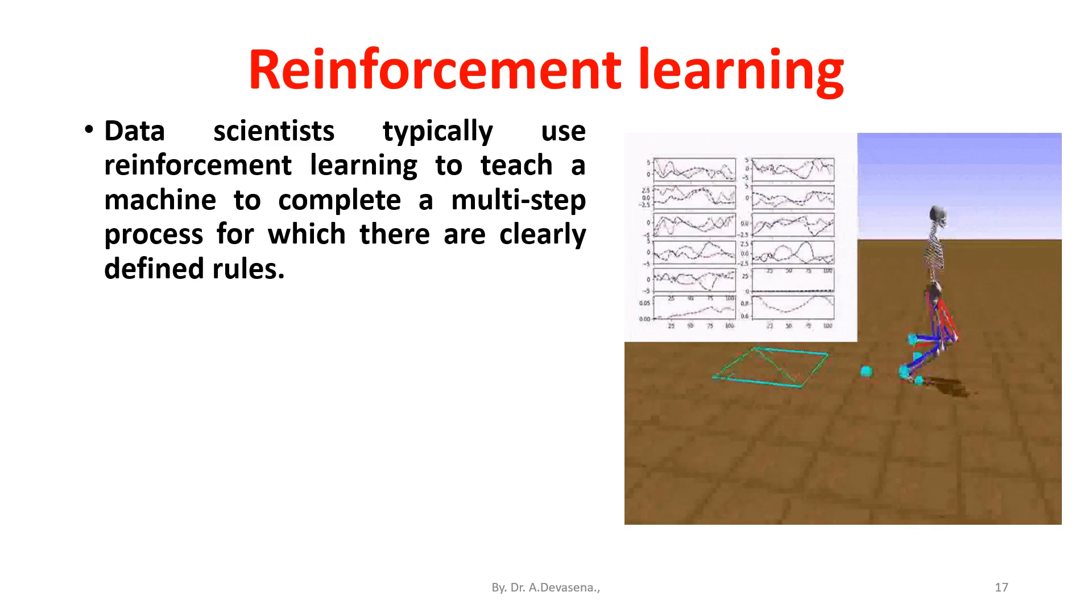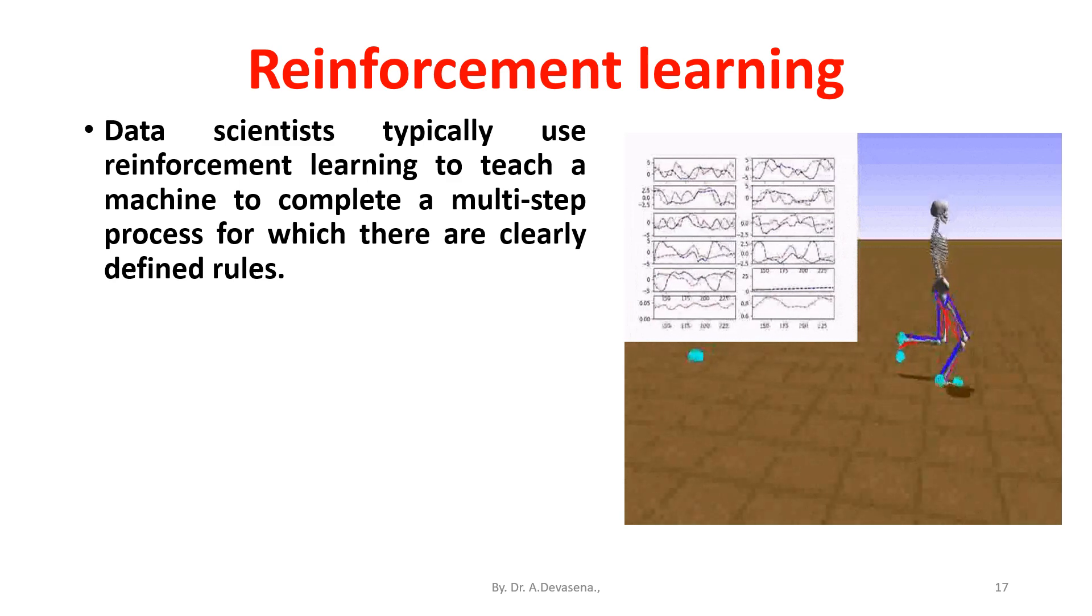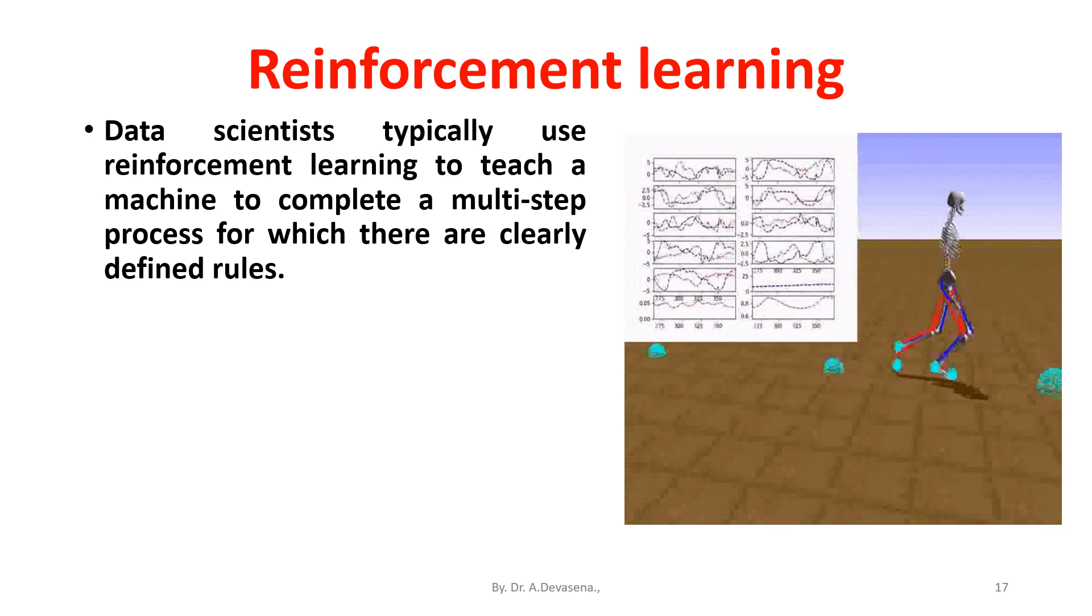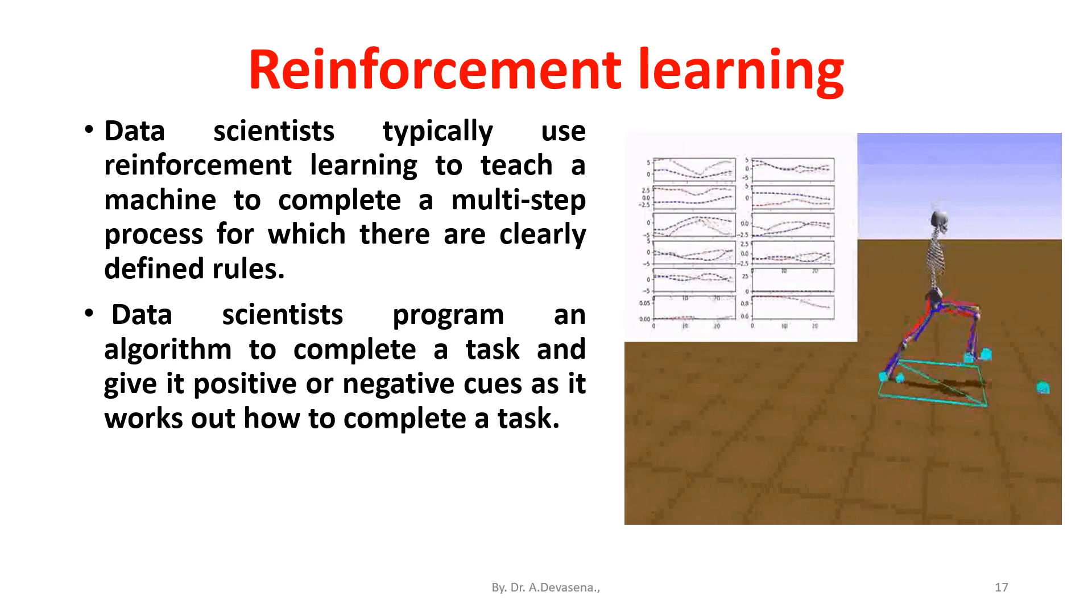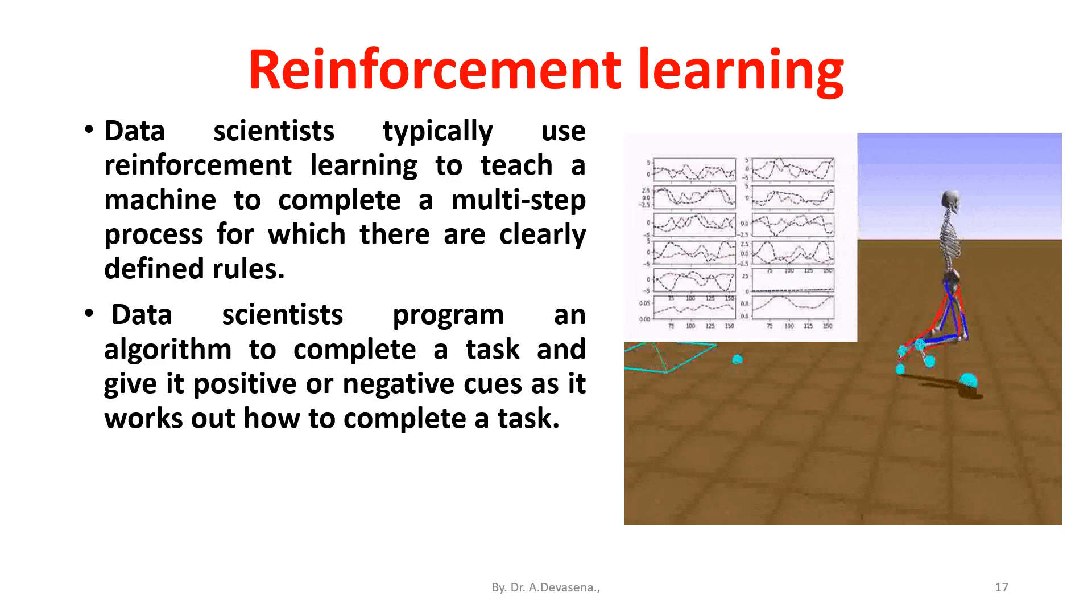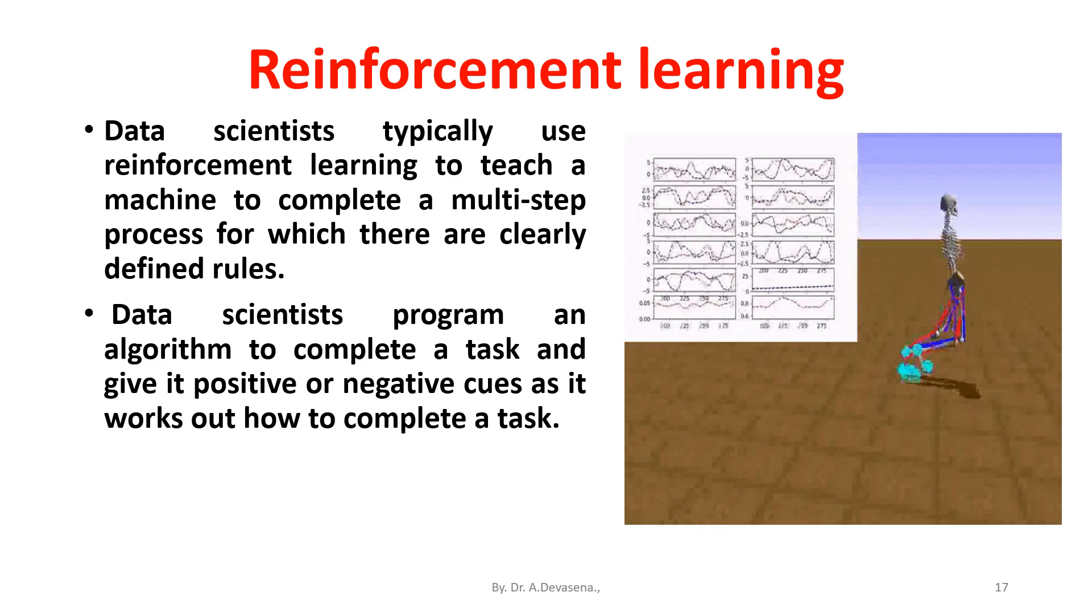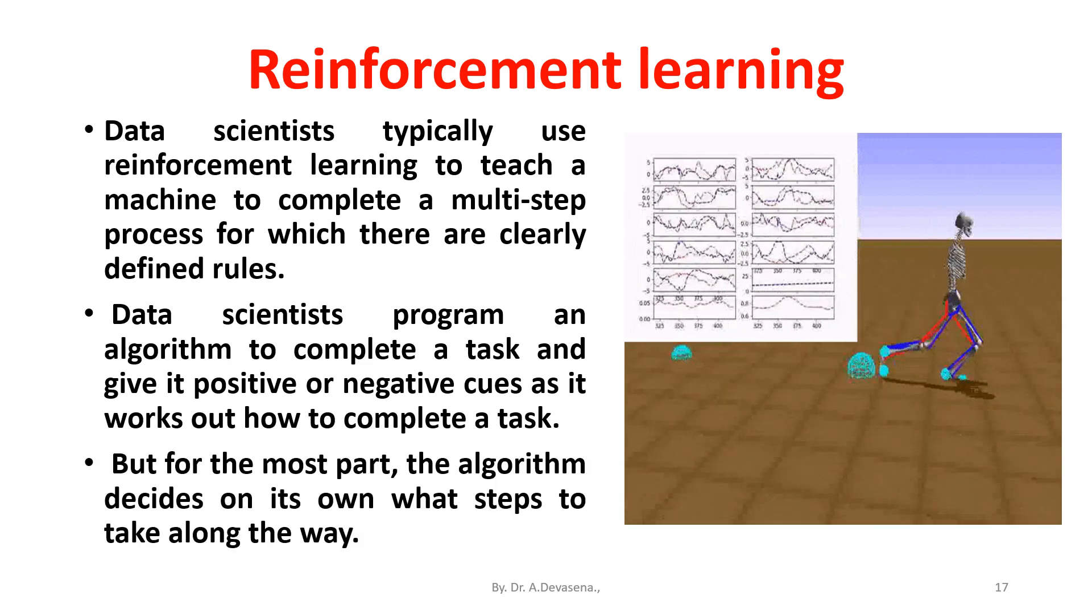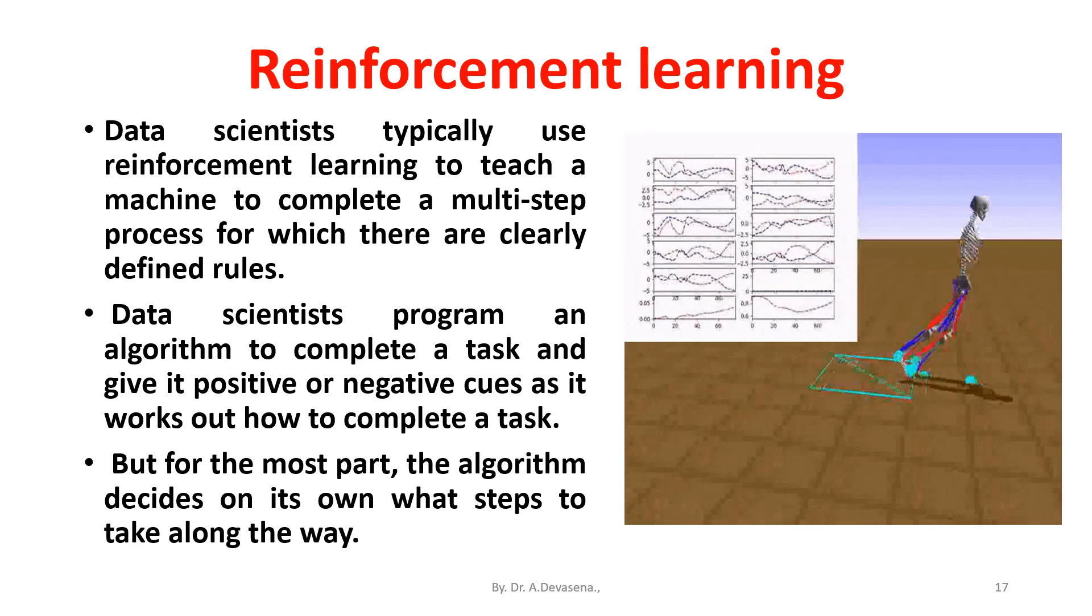Reinforcement learning: data scientists typically use reinforcement learning to teach a machine to complete a multi-step process for which there are clearly defined rules. Data scientists program an algorithm to complete a task and give it positive or negative cues as it works out how to complete the task. But for the most part, the algorithm decides on its own what steps to take along the way.